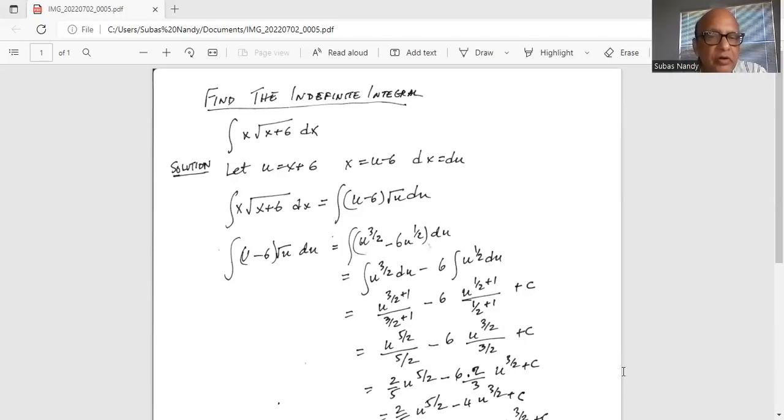So u multiplied by u to the power of half is u to the power of 3 by 2 minus 6 u to the power of half du.